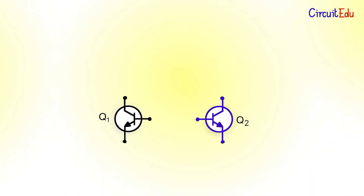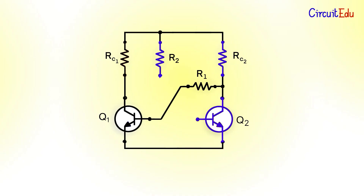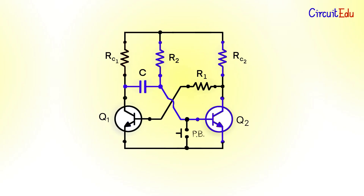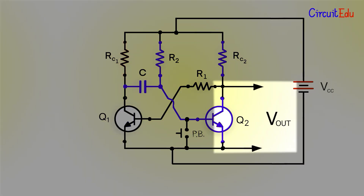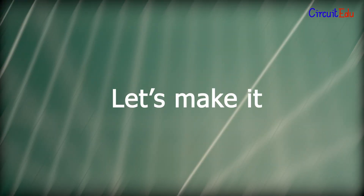The monostable multivibrator circuit consists of two NPN transistors with collector resistors. To turn transistor Q1 on, a resistor R1 is connected. To turn Q2 on, a base resistor R2 is connected. A capacitor is connected with one terminal at the collector of the first transistor and the other terminal at the base of the second transistor. To trigger the circuit, a push button is connected between base and emitter of Q2. The output is taken from Q2 between collector and emitter. When the push button is pressed, the circuit outputs a voltage pulse.